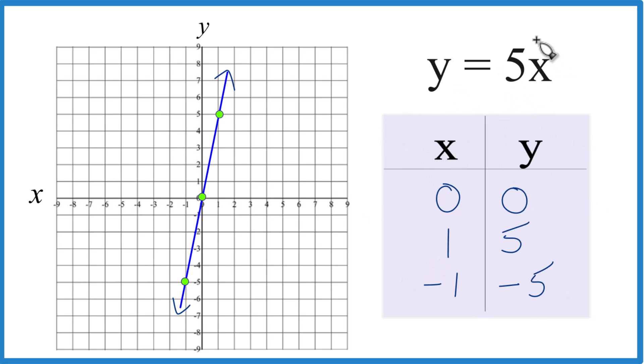And you can put any value in for x. You'll get a value for y. That point will be on our graph somewhere, on this line somewhere.